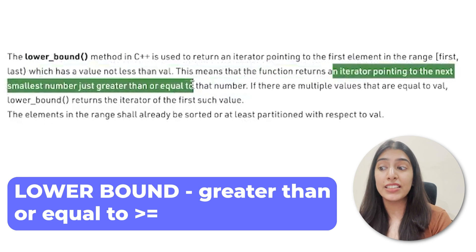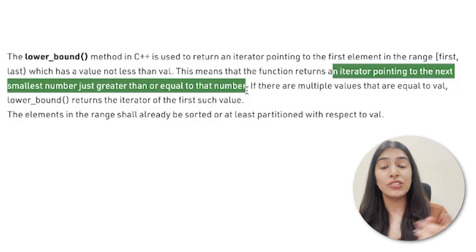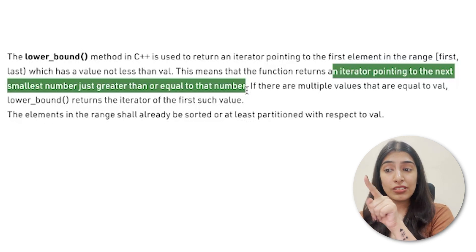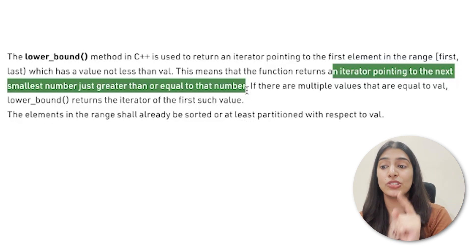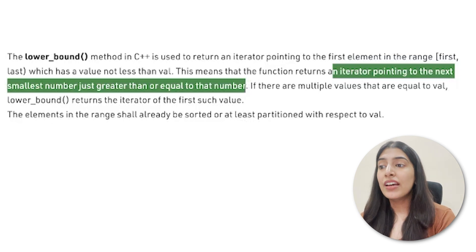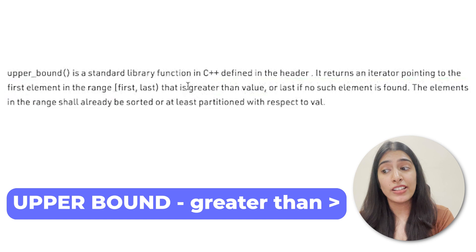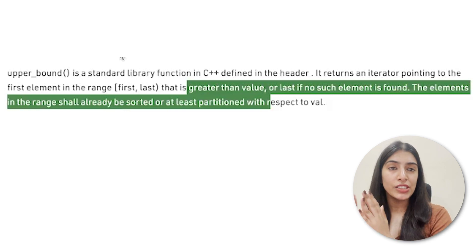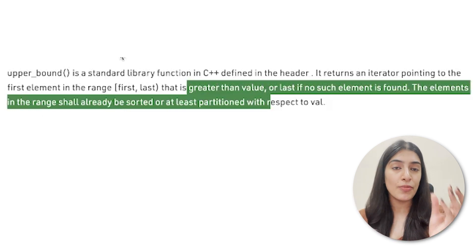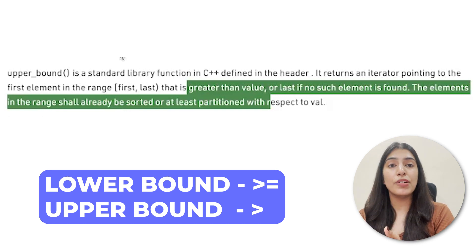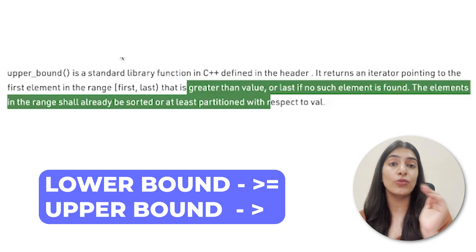For finding the exact index, we have two more functions. First is lower_bound — it returns an iterator pointing to the first value that is greater than or equal to the number. Suppose the value to find was two and two does not exist in the sorted array — it won't return two, it may return three if three is present. For upper_bound, it always returns a value strictly greater than the target — that is the only major difference between lower_bound and upper_bound.